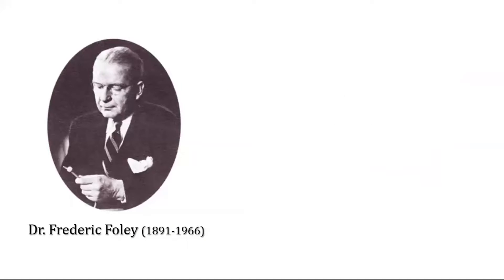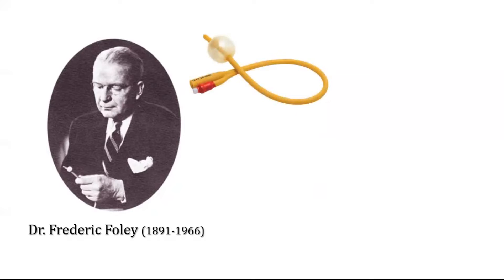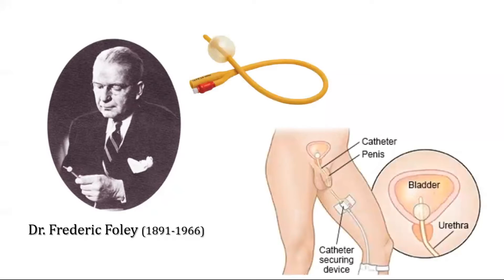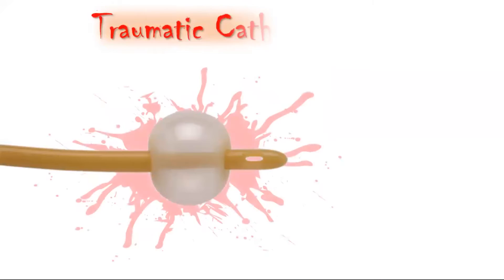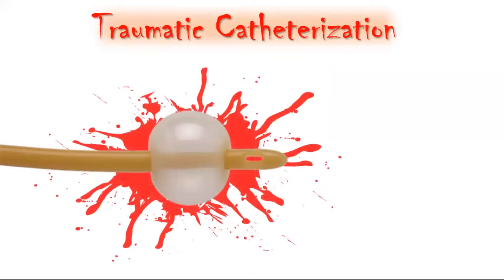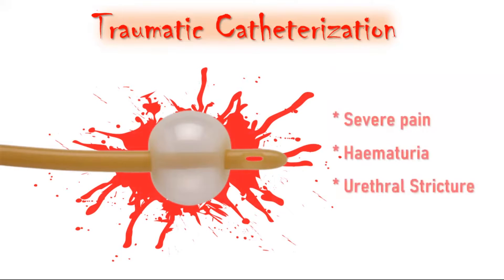It's a very old procedure, but the greatest revolution happened around 100 years ago when Dr. Frederick Foley, an American urologist, incorporated a balloon with the catheter. This balloon gave the catheter a self-retaining property and has made the life of catheterized patients very easy. But if not used cautiously, this balloon can cause serious traumatic injuries to the urethra both during insertion as well as removal of the catheter. These injuries can cause severe pain and hematuria, and can lead to urethral stricture which may require multiple dilatations and surgeries in future.